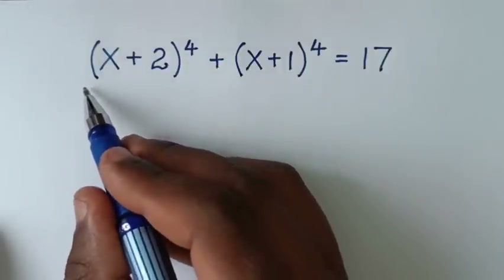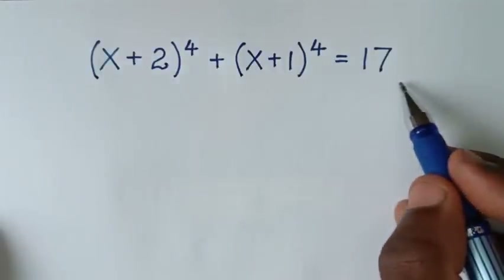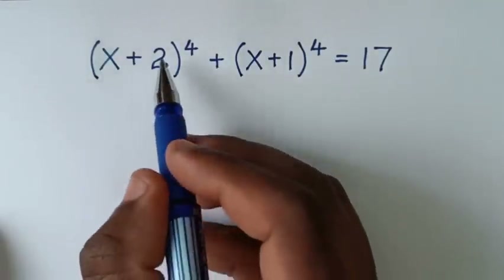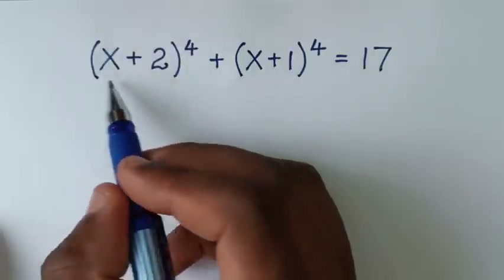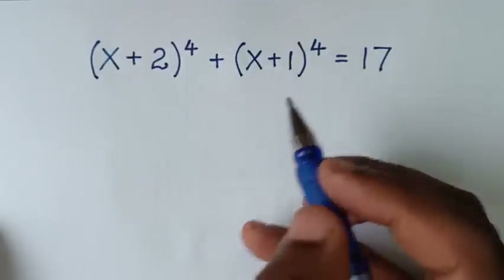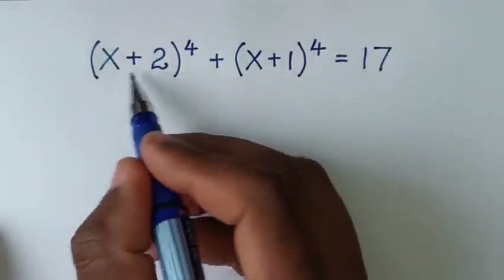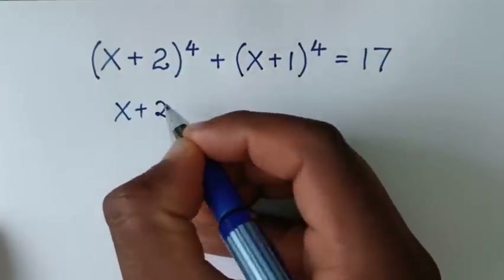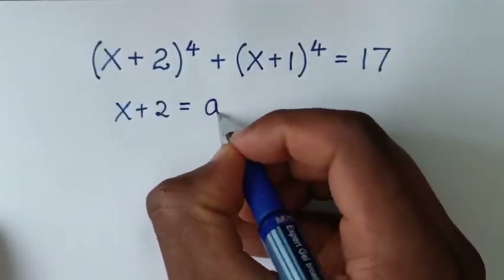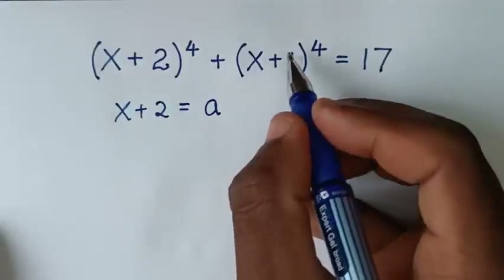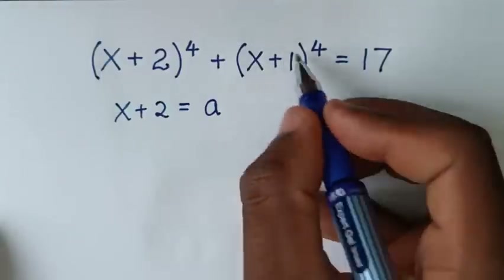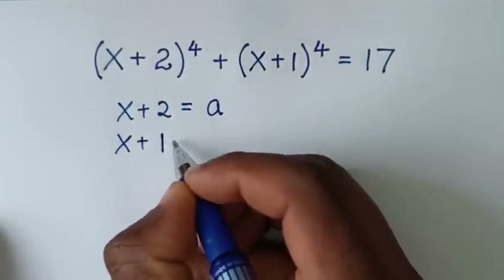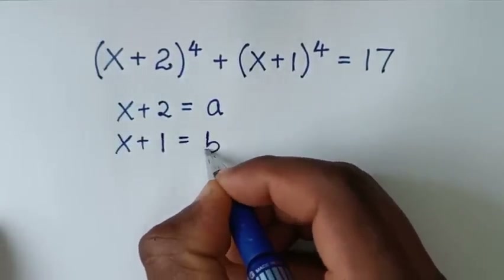To find the values of x from this equation, in the first step, we start by letting the inside of the brackets. So from x+2, we let this equal to a. And x+1, we let this equal to b.